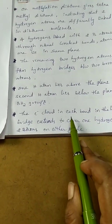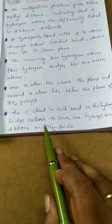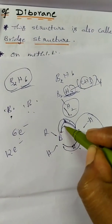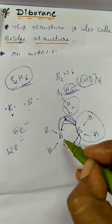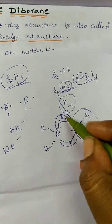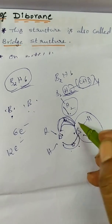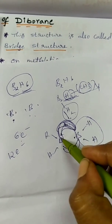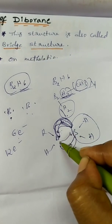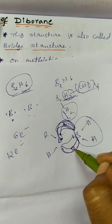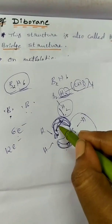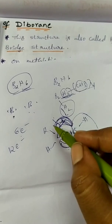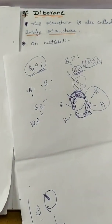In the hydrogen bridge, it extends to cover one hydrogen and two boron atoms on either side. There is a single electron from each boron and a single electron from the bridging hydrogen, forming a 3-center 2-electron bond. This is the proof for the diborane structure.